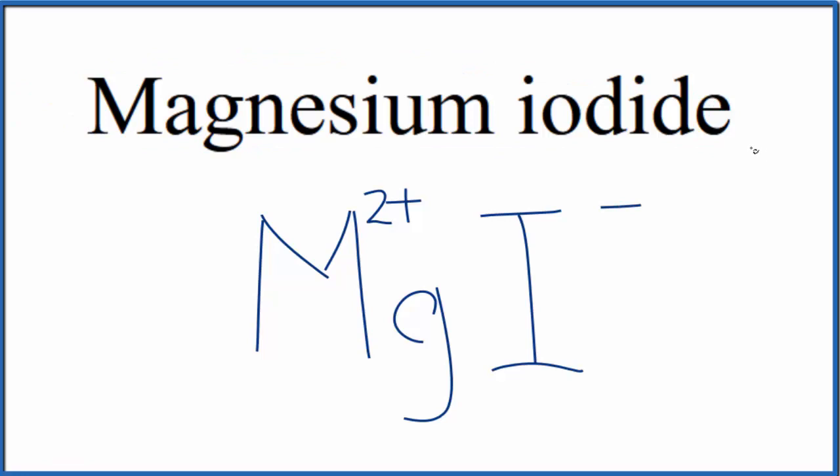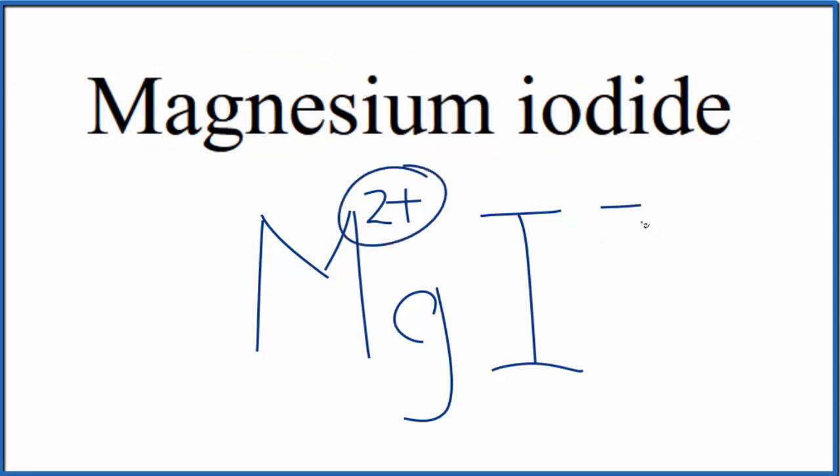Since this is a neutral compound, it doesn't say ion after it, these charges here need to add up to 0. We need a net charge of 0. If we had 2 iodide ions, 2 times this 1 minus, that would give us 2 minus. 2 minus and 2 plus, that adds up to 0.